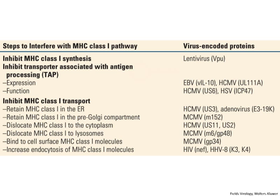This is a summary of all these interferences with class I presentation—a major target. Viruses have evolved to interfere at just about every step: class I synthesis, transcription, the TAP transporter, retaining class I in the ER so it doesn't reach the cell surface, retaining it in the pre-Golgi, pushing it into the cytoplasm, pushing it to lysosomes for degradation, binding to the surface so it can't present, and down-regulating by endocytosis. It's amazing. All these viruses typically cause persistent infections.